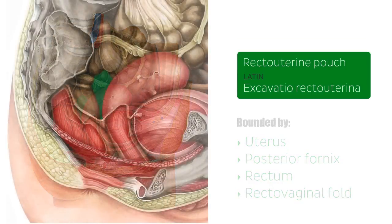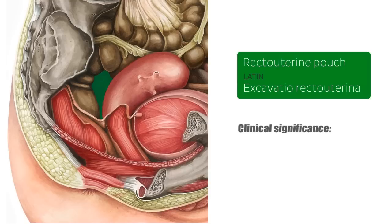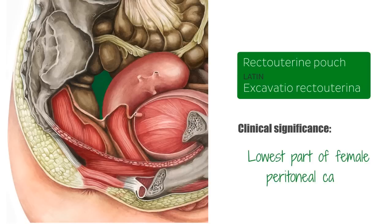The recto-uterine pouch is the lowest part of the female peritoneal cavity. Therefore, in a supine position, abscesses, infections, ascites, and blood within the peritoneal cavity preferably collect into the recto-uterine pouch.